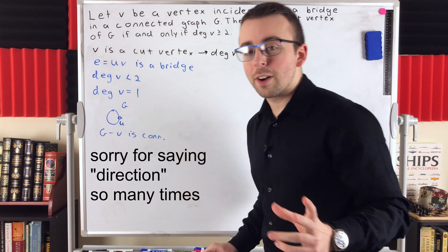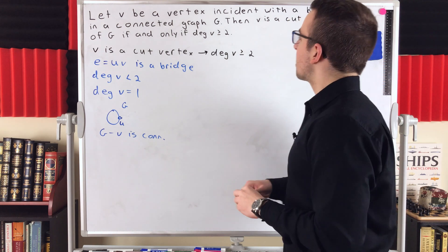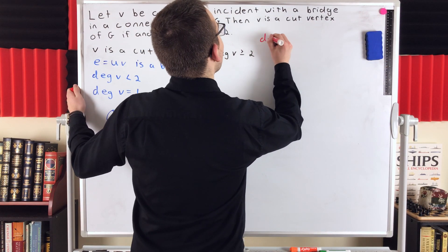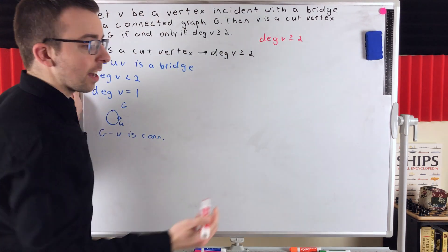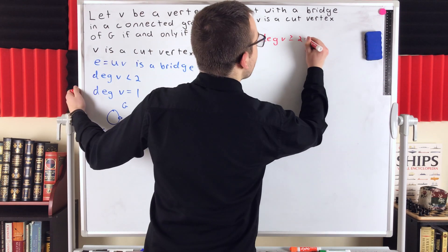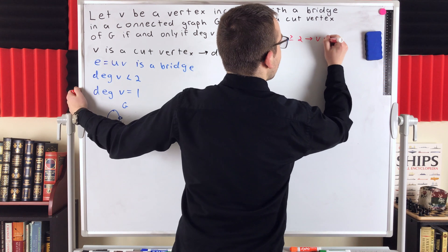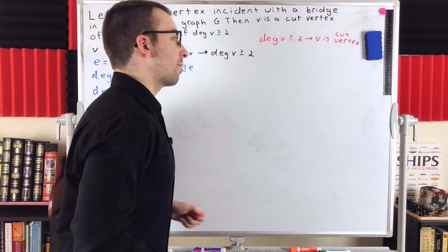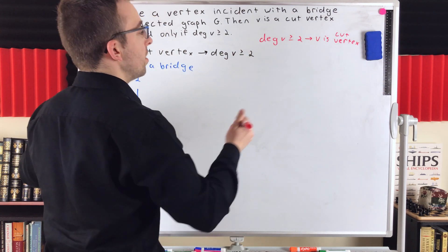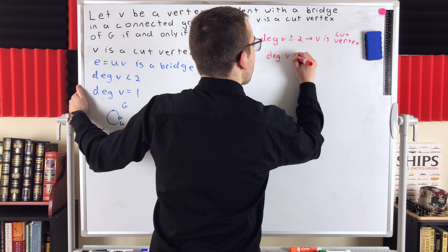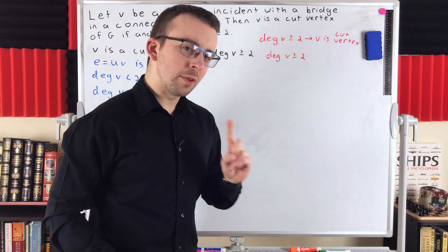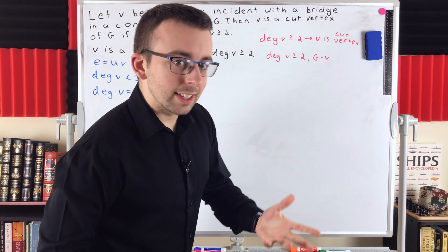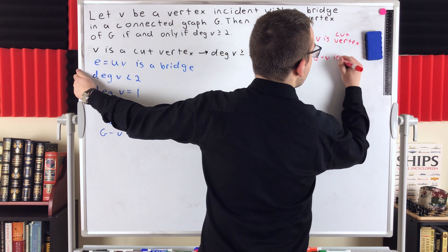The next direction is also pretty cool. We need to prove that if the degree of V is greater than or equal to 2, then V is a cut vertex. We're going to do this proof by contradiction, assuming the degree of V is greater than or equal to 2, and also assuming the opposite of what we want to prove — that G minus V is connected, meaning V is not a cut vertex.